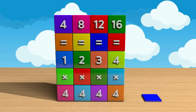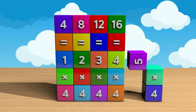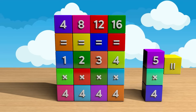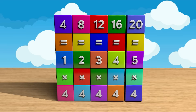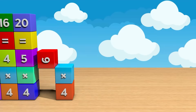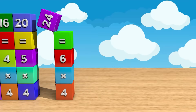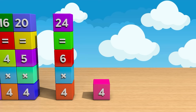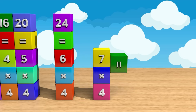Four times five equals twenty. Four times six equals twenty-four. Four times seven...